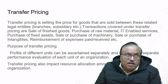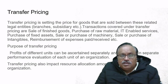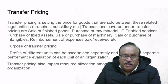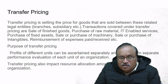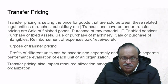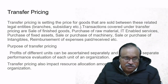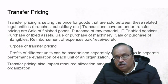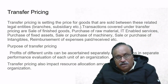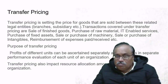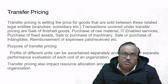Transfer pricing is setting the price for goods sold between related legal entities—branches, subsidiaries, etc. Transactions covered under transfer pricing include sale of finished goods, purchase of raw material, IT-enabled services, purchase of fixed assets, and sale or purchase of machinery. What usually happens is that one unit purchases parts from another unit as sub-components for its main product. The purposes of transfer pricing are: profits of different units can be ascertained separately, aiding performance evaluation of each unit, and transfer pricing also impacts resource allocation among different units of an organization.